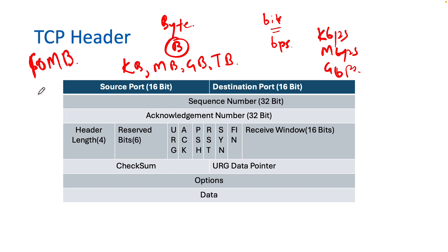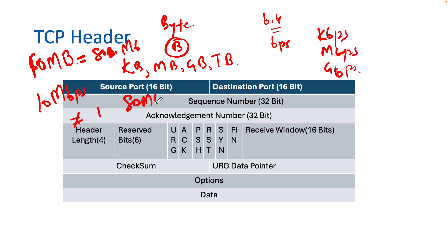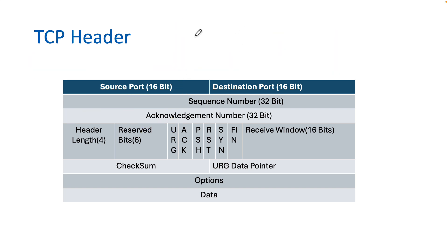If your file is 10 megabytes and your speed is 10 megabits per second, that doesn't mean the file will move in one second — that's a wrong assumption. You convert 10 megabytes to bits: it becomes 80 megabits. Then 80 megabits divided by 10 megabits per second equals 8 seconds. So your 10 megabyte file will transfer in 8 seconds at 10 Mbps. People get confused mixing bytes and bits.